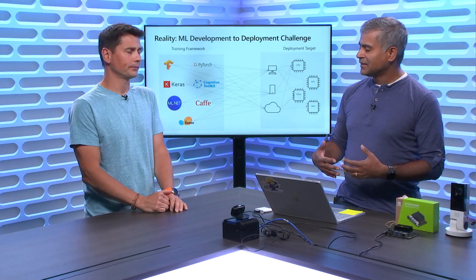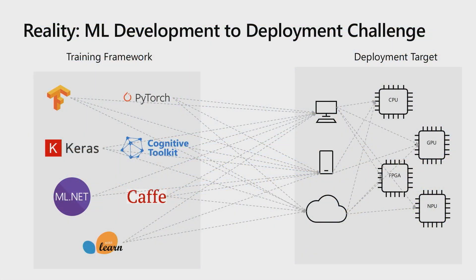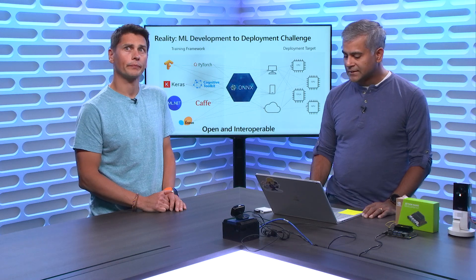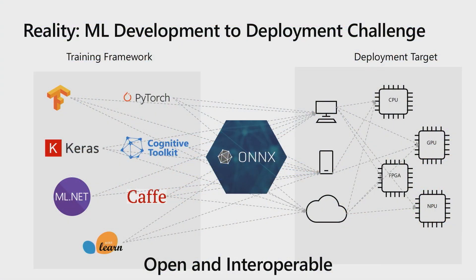Taking a step back, the reality is that models are developed from different sources and all look different because they are represented in frameworks like TensorFlow, PyTorch, Keras, and others. On the execution side, we have heavy edge processors like Intel and AMD, CPUs and GPUs in the cloud, or custom neural compute sticks like the Movidius or Qualcomm processors — all custom silicon. What we have done with ONNX is standardize the model representation into a common graph format, and we have built a runtime called ONNX Runtime, which is open sourced. This runtime is the inference engine that executes ONNX models across different hardware endpoints.